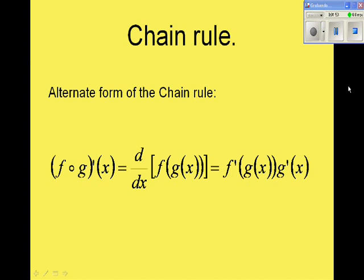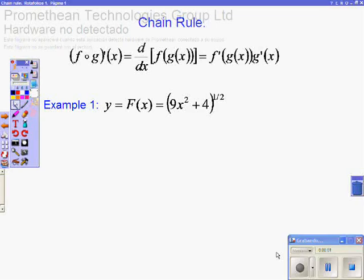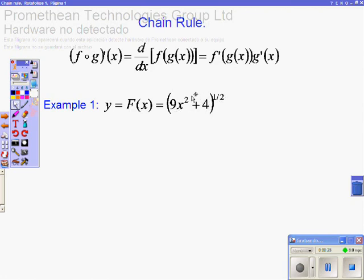Let's work the previous example using this alternate approach. I'm going to find the derivative of this expression using the chain rule. The first step will be to identify the outer function f and the inner function g of x. The outer function is this one because I am raising this expression, this binomial, to this power. And the inner function is this binomial, 9x squared plus 4.